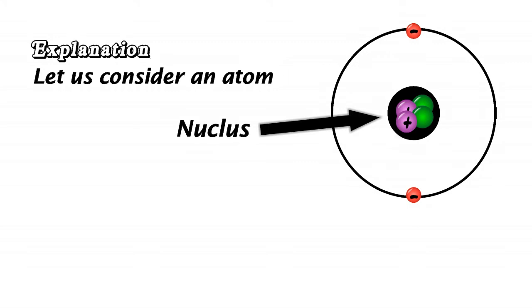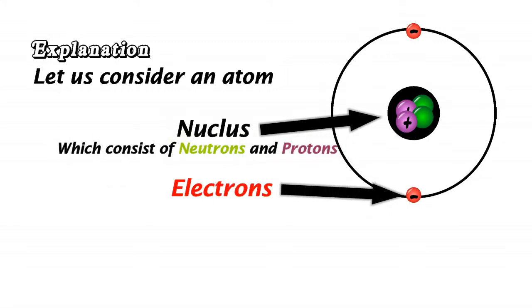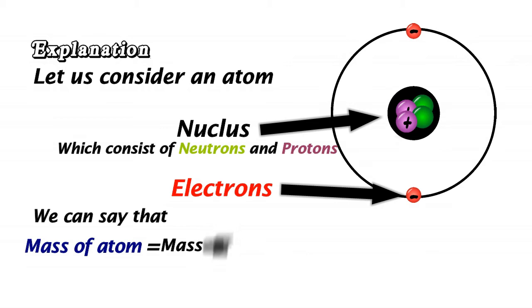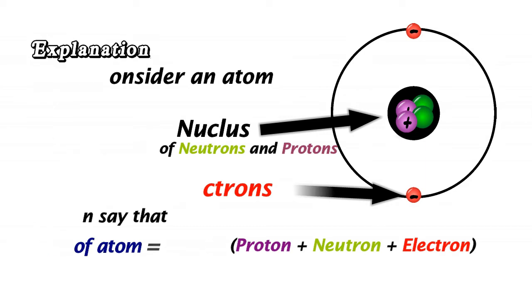Let us consider an atom which has a nucleus consisting of neutrons, protons, and an electron cloud outside it. From this, we can say that the mass of the atom will be equal to the mass of proton, mass of neutron, and mass of electron.